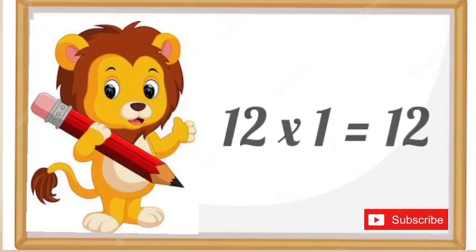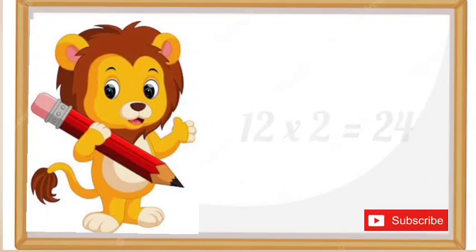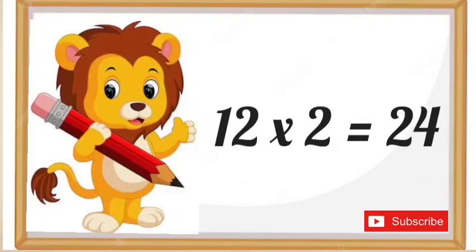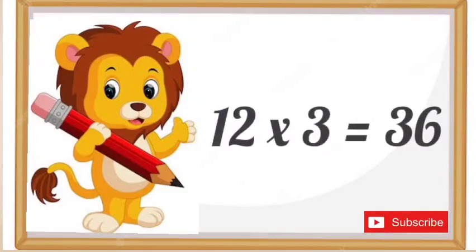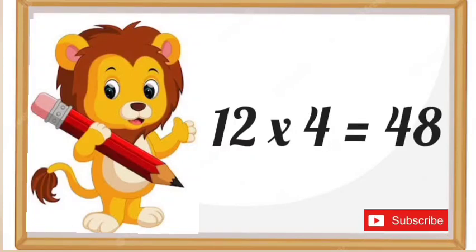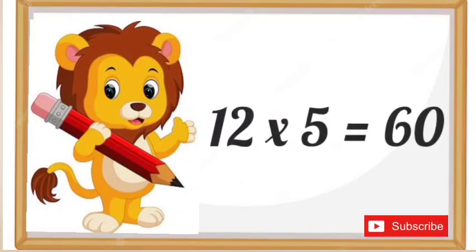12 ones are 12. 12 twos are 24. 12 threes are 36. 12 fours are 48. 12 fives are 60.